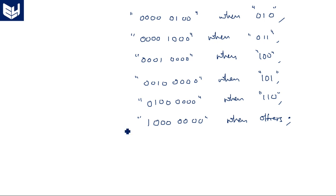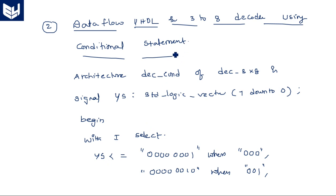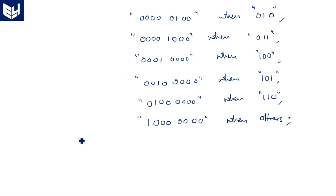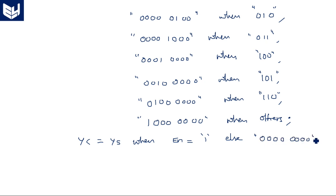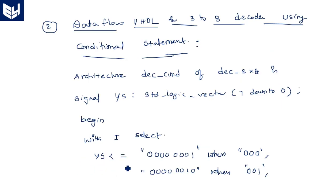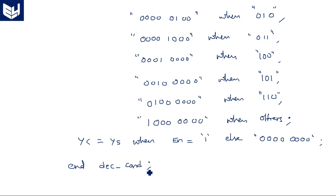All these statements are assigned to `ys`. But the original output is `y`. So `y` should be assigned with `ys` when enable is equal to 1, else all outputs are 0. End decoder. The architecture name is `decoder_conditional_statement`, so: `end decoder_conditional_statement`. This completes the data flow model of the 3-to-8 decoder in two different styles — one directly writing Boolean expressions, another using conditional statements. In the next video I will explain the 3-to-8 decoder behavioral model VHDL code. Thank you.